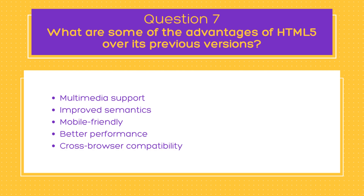Next is improved semantics. HTML5 includes new semantic tags like header, footer, nav, and article, which make it easier to structure web pages in a more meaningful and organized way. We'll talk about HTML semantics in the next question, but this helps search engines better understand the content of web pages, resulting in improved SEO — that is, search engine optimization.